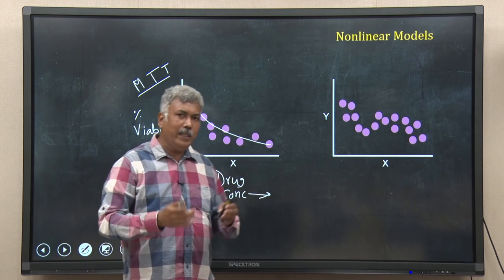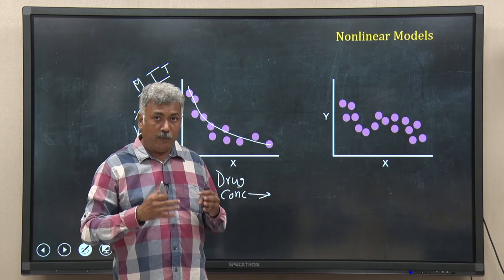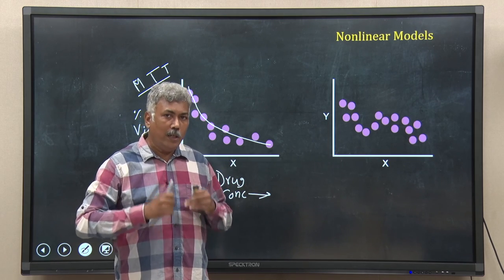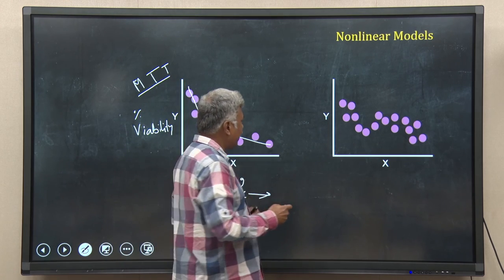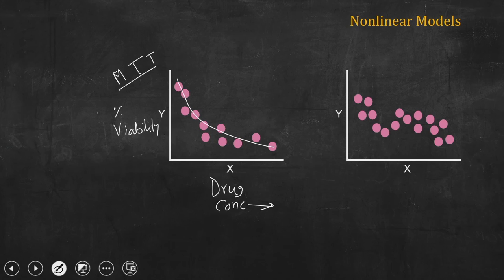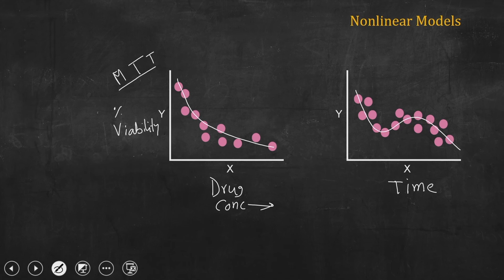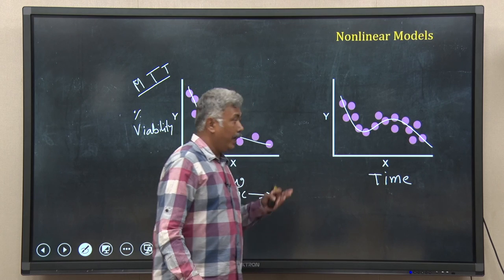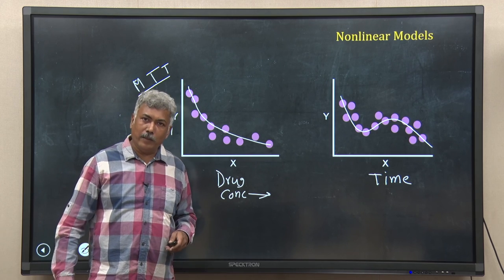Linear regression cannot help us — we have to fit some non-linear model. In another case, maybe the horizontal axis is time and you are measuring some cellular property or a property of your organism, and that may be varying in an undulating manner. Again, you need a non-linear model.